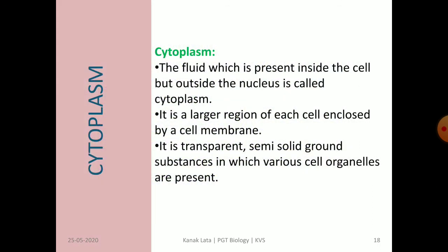The next topic is about cytoplasm. The main component of cytoplasm is water containing fat, protein, carbohydrate, and various organic substances. It helps in the exchange of material between cell organelles, and the process of glycolysis takes place in the cytoplasm.